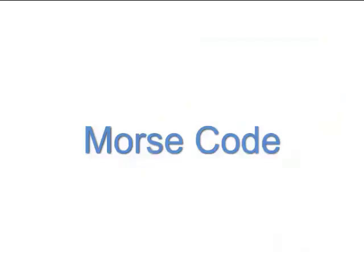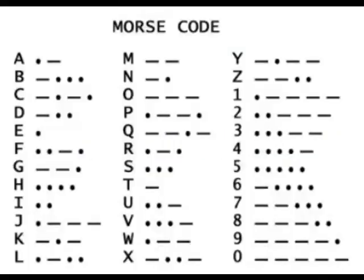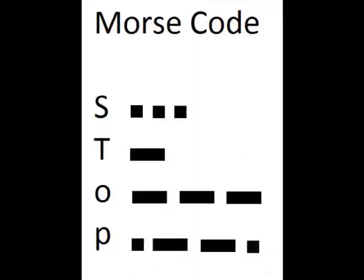One thing I thought about was Morse code. Morse code is a very old fashioned system that uses dots and dashes to represent the letters of the English alphabet. For example, 'stop' in Morse code would be this, and 'forward' in Morse code would be this.